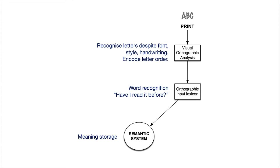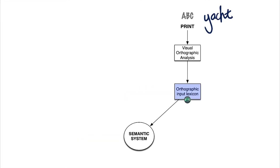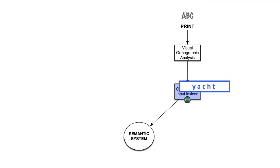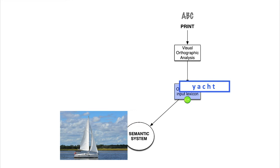The orthographic input lexicon does not care whether a word follows the rules of English. A word like 'yacht' — you can't sound that out — but that's okay because this process is not sounding anything out, it is recognizing words. It is seeing the sequence Y-A-C-H-T, recognizing yes that's the word 'yacht', and connecting it to its meaning: the sailing vessel.